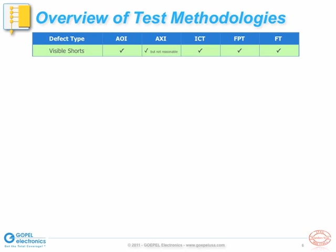Visible shorts, for example, can be detected by all five test methodologies. One may not want to use x-ray inspection to look for this type of defect, though, since x-ray equipment is expensive and x-ray tests are typically slow. For hidden shorts, on the other hand, x-ray is a good inspection methodology, whereas AOI obviously cannot see such hidden faults. In-circuit test, flying probe test, and functional tests all can detect hidden shorts, because they actually test the electrical properties of the unit under test, rather than just visually inspecting it.